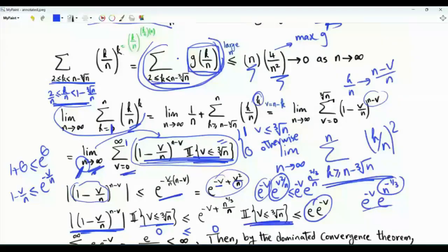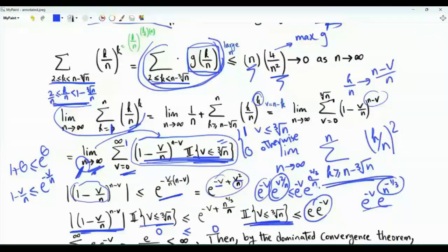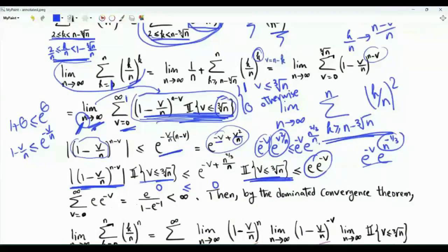This justifies the initial steps: without restricting to the cube root of n, v could be up to n and we could not drop the n dependence in the bound. By restricting, we obtained a summable upper bound. Since Σ e·e^(-v) from v=0 to ∞ is a finite geometric series, the dominated convergence theorem allows us to take the limit inside the sum.